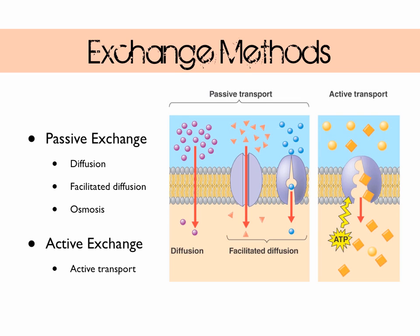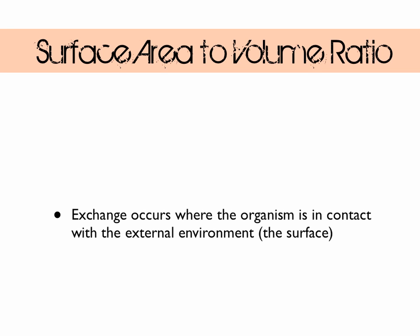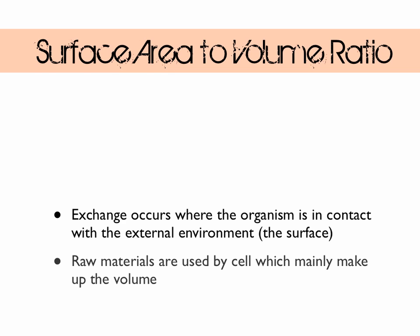Let's look at what can restrict exchange. Exchange can only occur where the organism is in contact with the environment, and that's the surface of the organism. There's a problem with this, because the cells that are using up the raw materials are within the organism, not just on the surface. So these cells are making up the volume of the organism, and this becomes a big problem as the size of the organism increases.